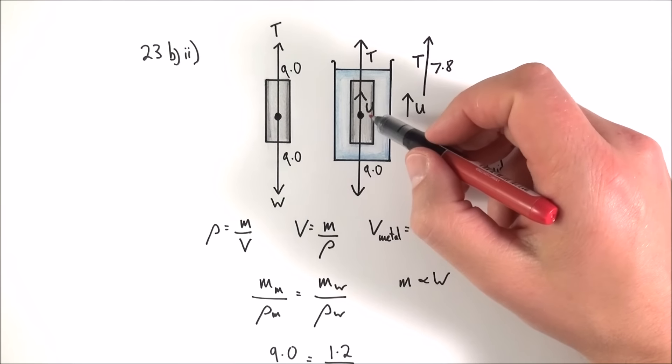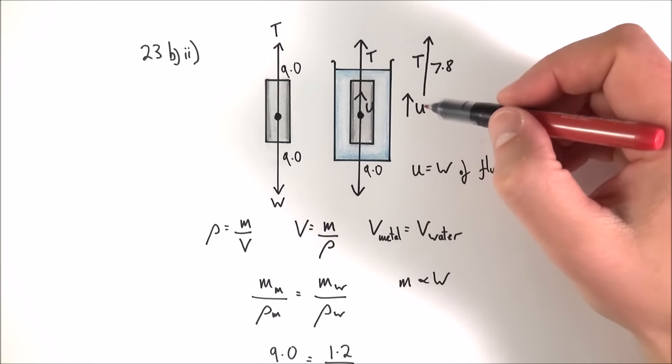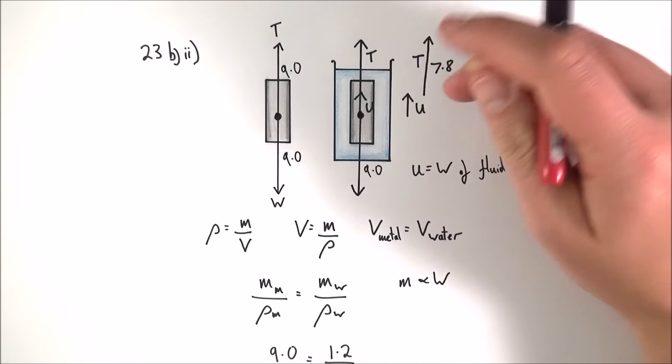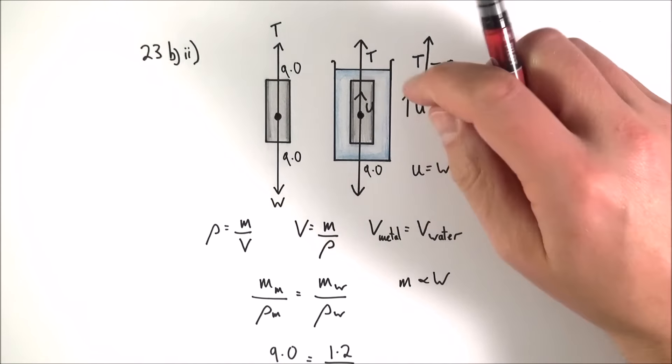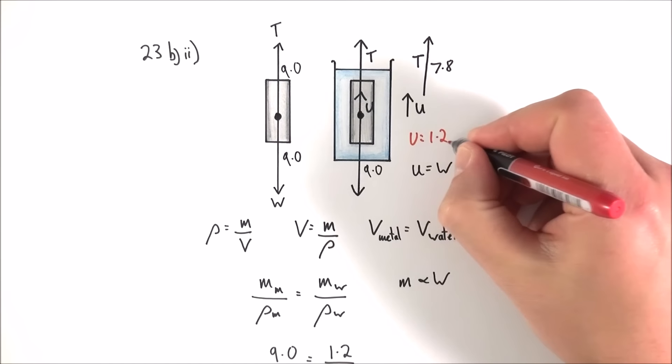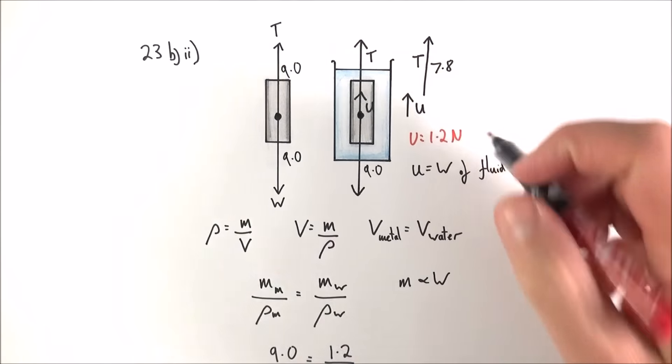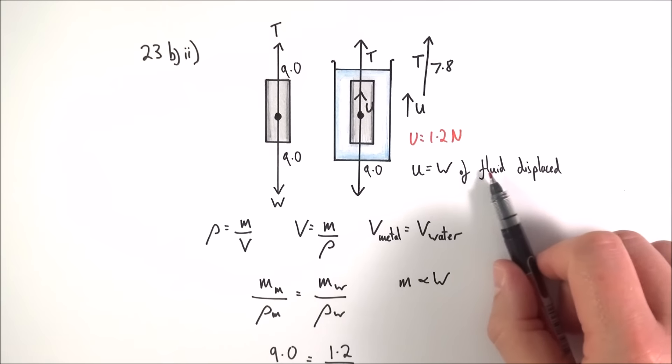So now you've got an upthrust and that means that because effectively the upwards force is balanced by the downwards force the tension can be less and the tension goes down to 7.8. What that means then is the upthrust is equal to 9 minus 7.8 which is 1.2 newtons.